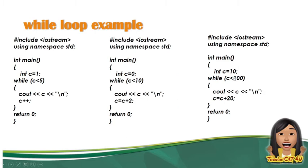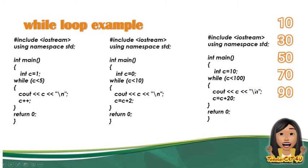Ito naman yung isa pang sample program na kung saan ang initialization niya ay 10. So mag-start yung value niya sa 10. Ang 10 ay mas maliit sa 100, didisplay niya ang 10. Bababa yung program, ang increment niya ay 20. So 10 plus 20 is equal to 30. Ang 30 ay mas maliit sa 100, i-didisplay niya ang 30. Mag-plus 20, magiging 50. Mas maliit pa rin si 50 sa 100. Hanggang through yung given condition, ginagawa niya yung block of code. Pero pag nag-false, nag-exit siya sa looping natin.